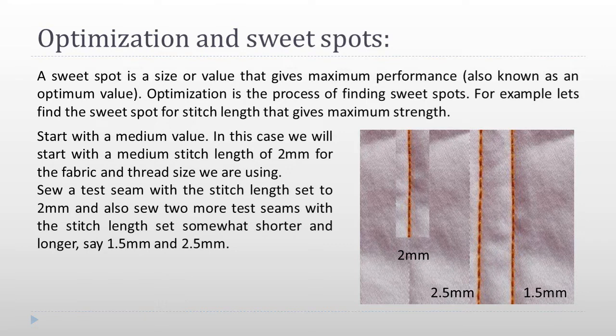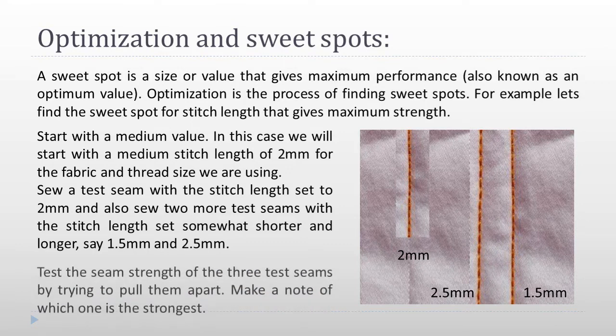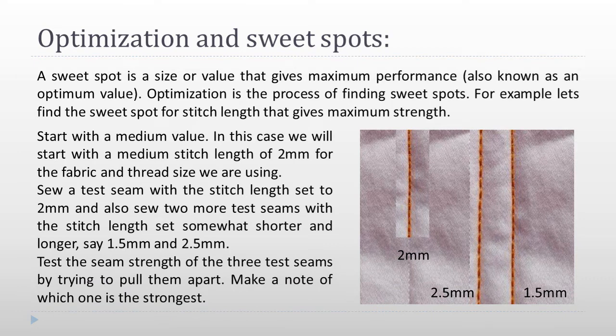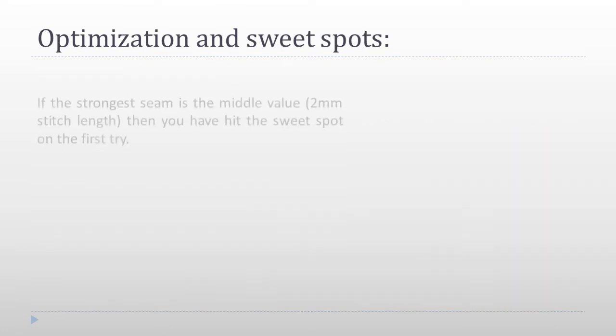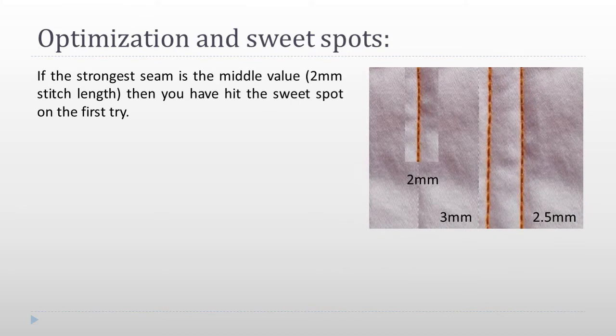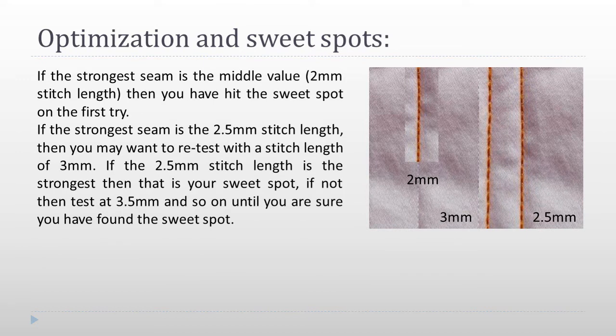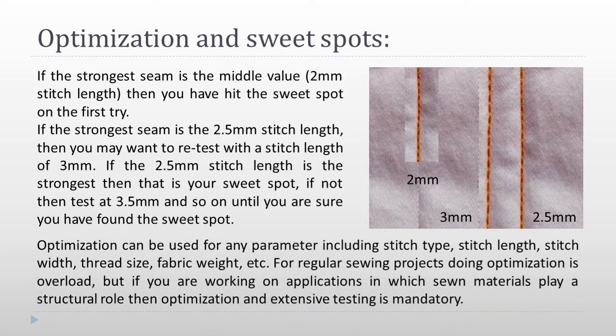Sew a test seam with the stitch length set to 2mm and also sew two more test seams with the stitch length set somewhat shorter and longer, say 1.5mm and 2.5mm. Test the seam strength of these three test seams by trying to pull them apart, and make a note of which one is the strongest. If the strongest seam is the middle value 2mm stitch length, then you have hit the sweet spot on the first try. If the strongest seam is 2.5mm, you may want to retest at 3mm, and so on until you find the sweet spot. Optimization can be used for any parameter including stitch type, stitch length, stitch width, thread size, and fabric weight. For regular sewing projects, doing optimization is overkill, but if you are working on applications in which sewing materials play a structural role, then optimization and extensive testing is mandatory.